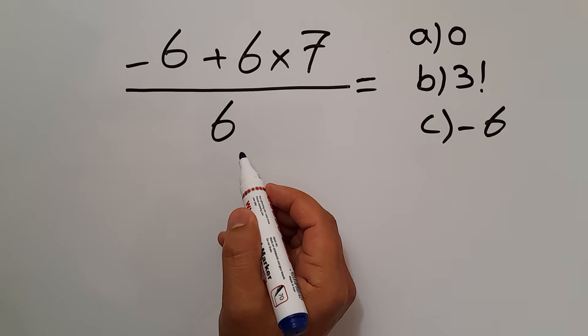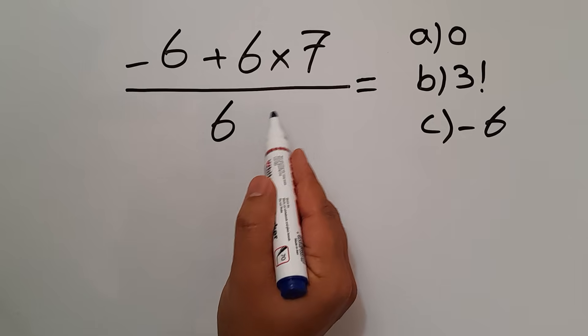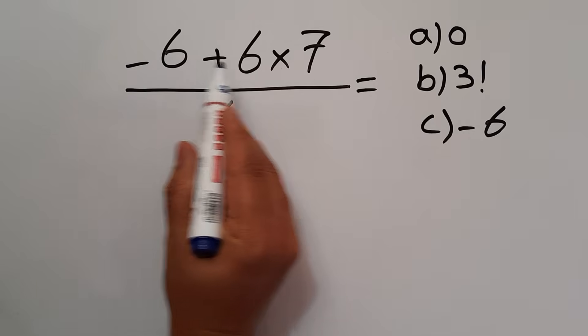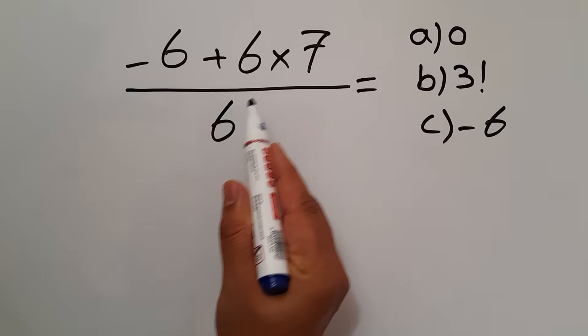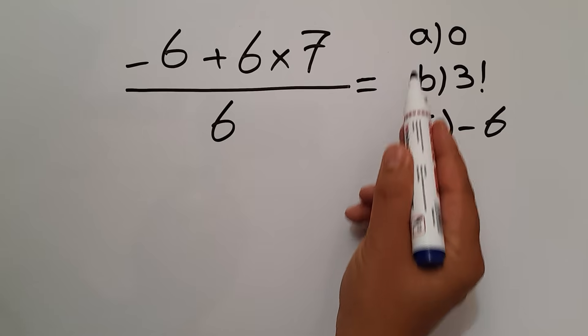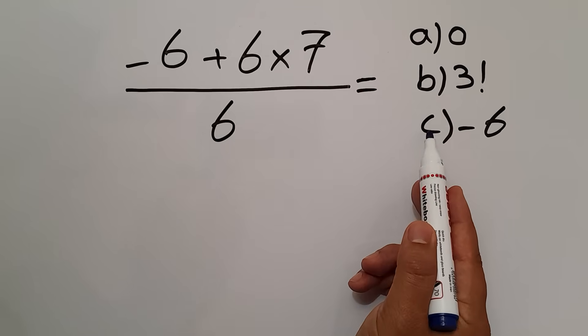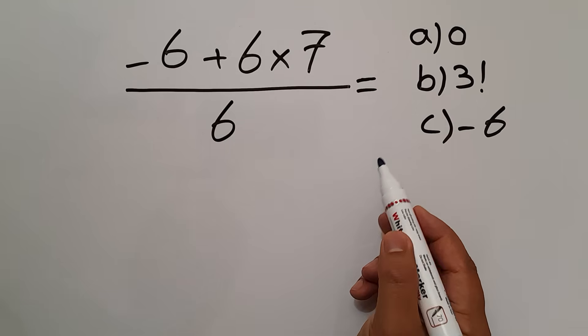Hey guys, welcome to MathJoy. In this video, we want to find the value of this fraction: negative 6 plus 6 times 7 over 6. Which option is correct? A, B, or C? Let's dive in and find out.